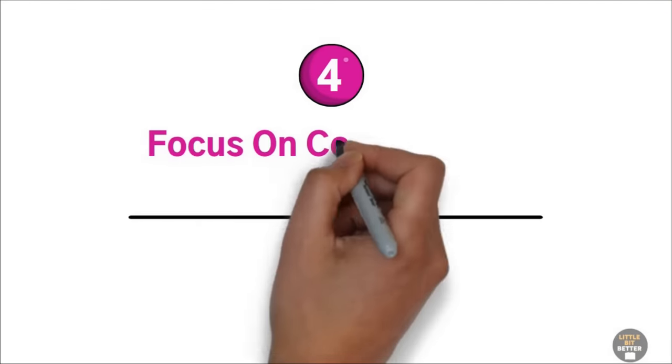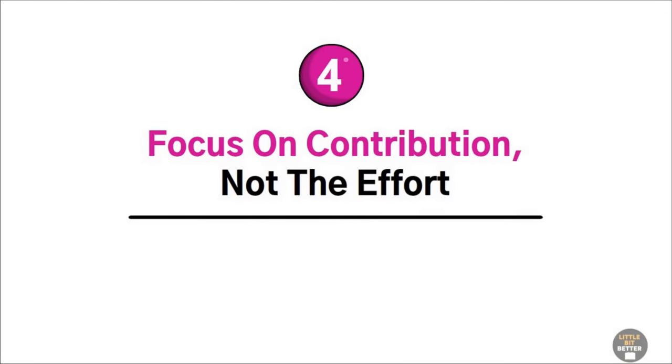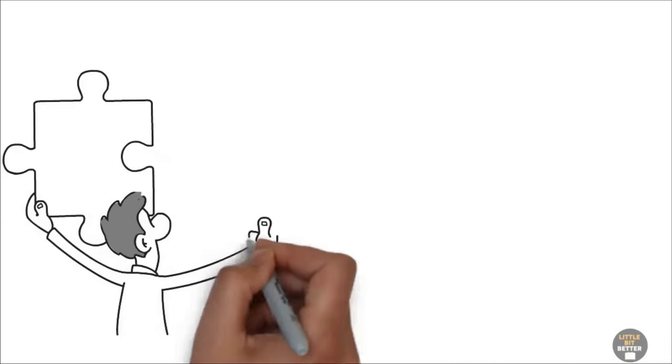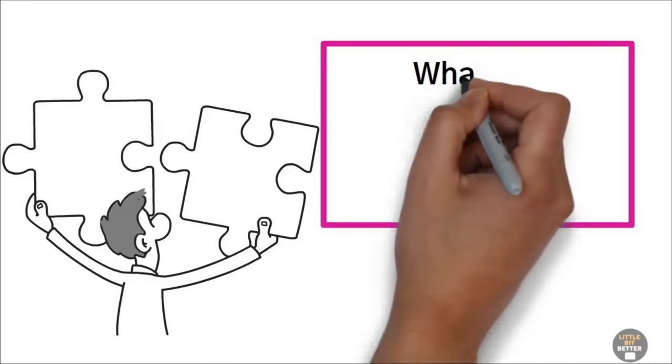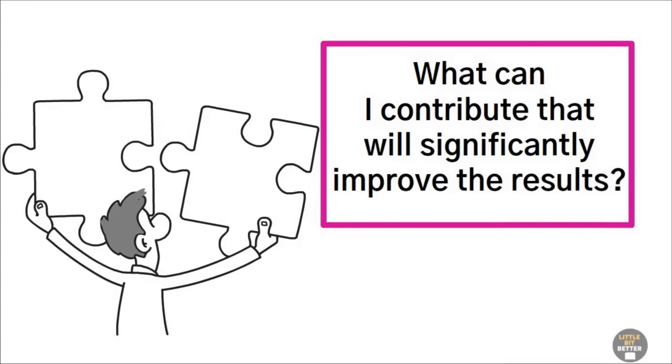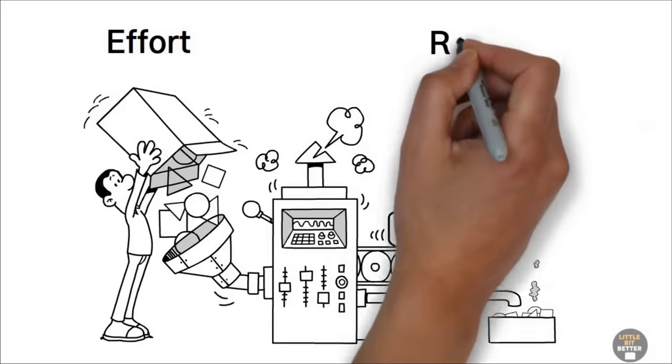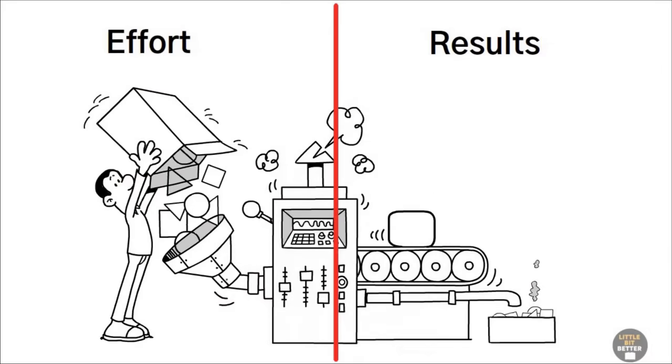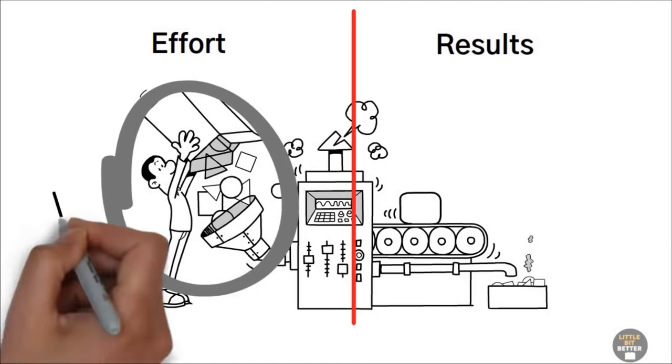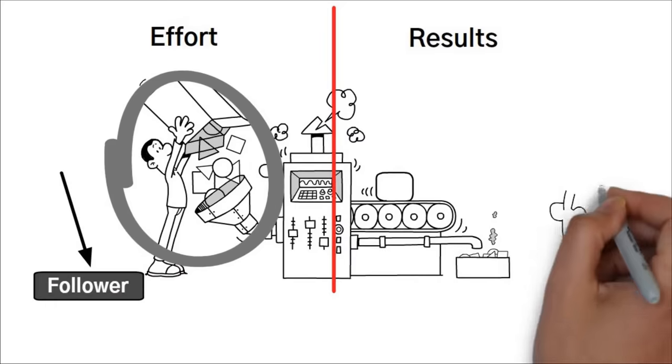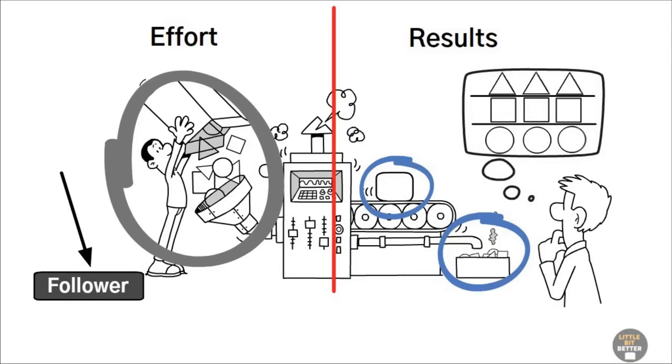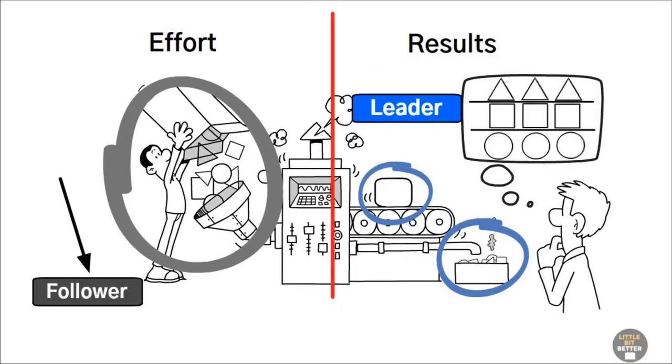Number four, focus on contribution, not the effort. Effective people always focus on contribution. They ask, what can I contribute that will significantly improve the results? Many people focus on the effort they put in rather than the results. Drucker says that if you focus on just doing your tasks, you're a follower, no matter how high your title is. But if you aim to make a difference and focus on results, you're a leader, no matter how low your title is.